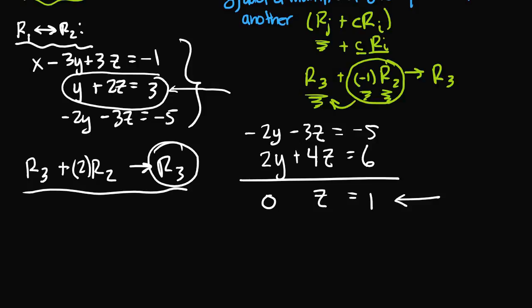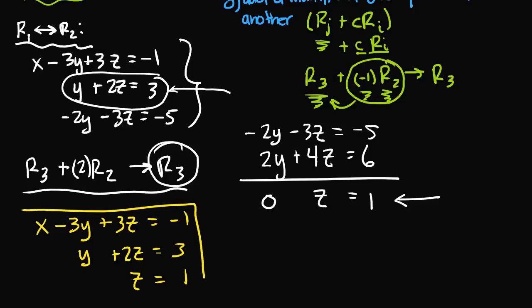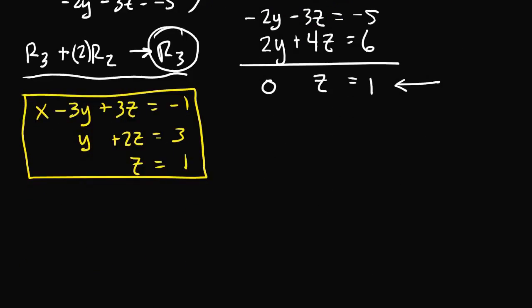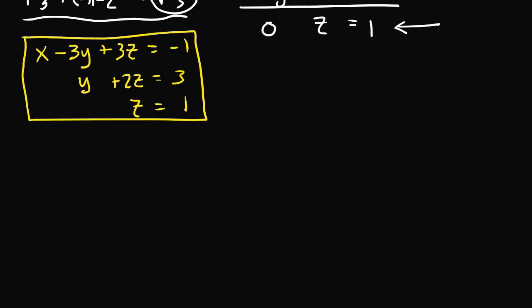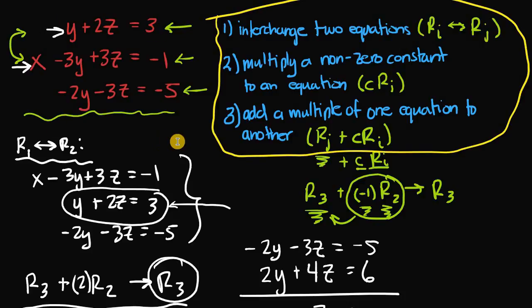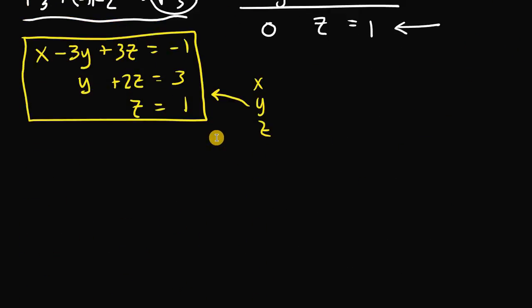My new equivalent system of linear equations is: x minus 3y plus 3z equals negative one, y plus 2z equals three, and z equals one. This is an equivalent system because I manipulated the original system by following the three elementary row operations. The new system is now in row echelon form, so any solution will also be valid for the original system.